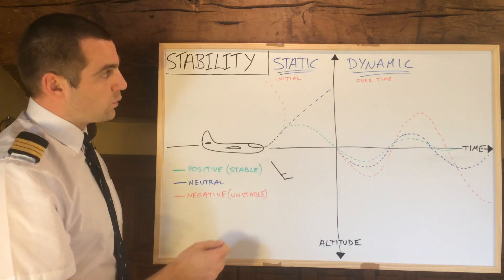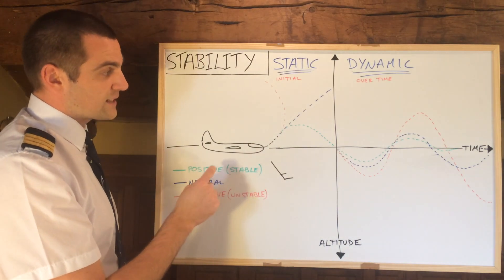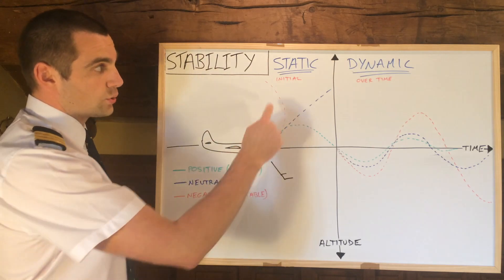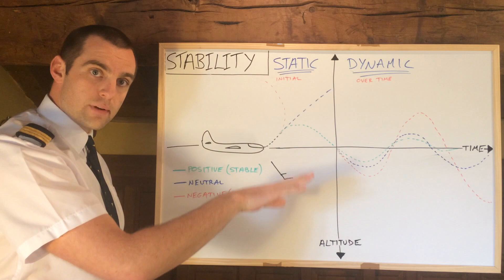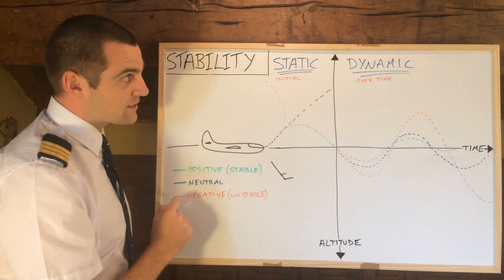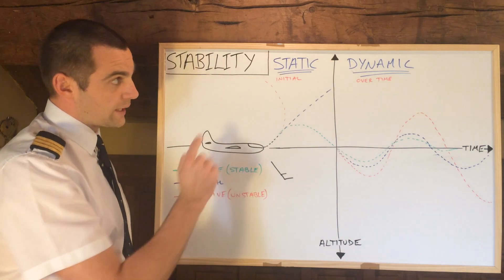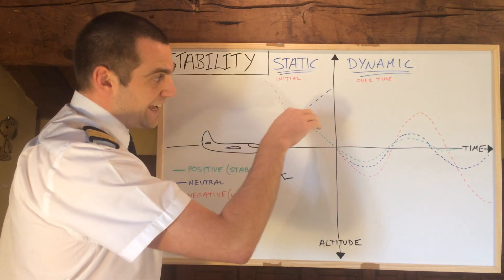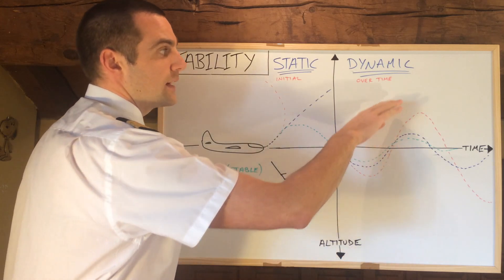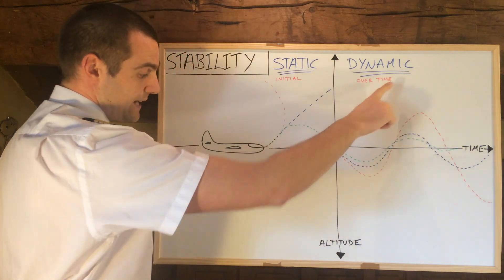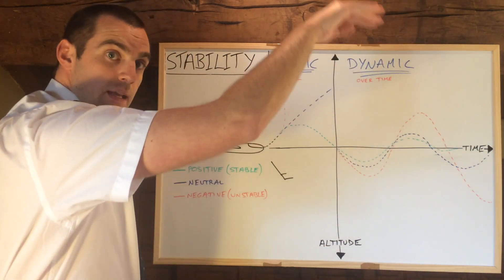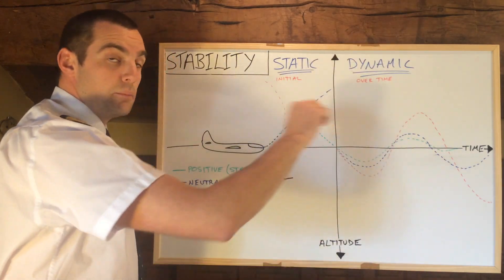The last one — the worst case — would be if we had positive static stability but negative dynamic stability. In this case the initial tendency is to counteract that disturbance, so it's going to initially pitch down. However, because it's dynamically unstable, the oscillations get larger over time — bigger and bigger — and the altitude changes are going to get bigger and bigger.